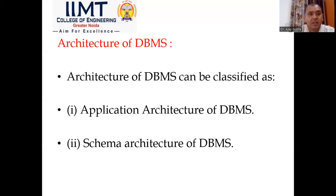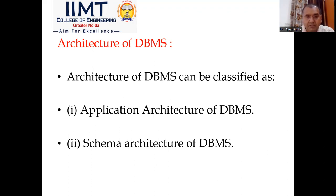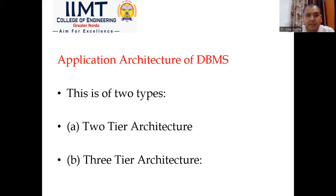Next, what are the architectures of DBMS? Architecture of DBMS is broadly classified in two parts: application architecture of DBMS and schema architecture of DBMS. Application architecture of DBMS is further divided into two parts: two-tier architecture and three-tier architecture.